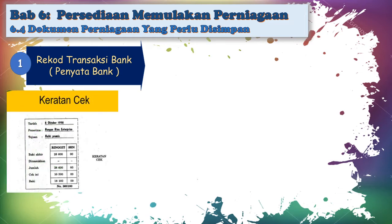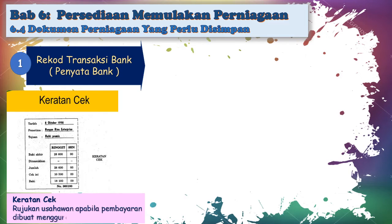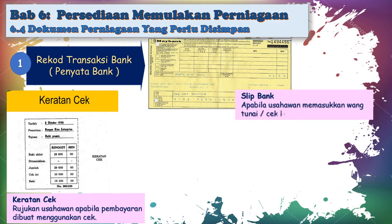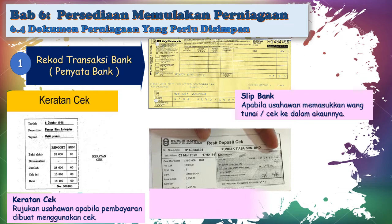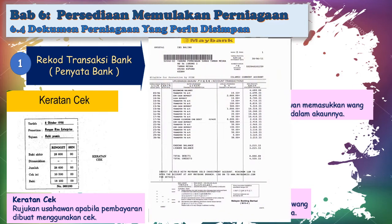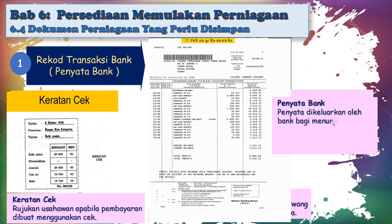Rekod transaksi bank merangkumi: keratan cek, yang perlu disimpan oleh usahawan sebagai rujukan apabila pembayaran dibuat menggunakan cek. Slip bank, apabila usahawan memasukkan wang tunai ataupun cek ke dalam akaunnya. Slip pindahan wang, apabila usahawan membuat pemindahan wang dari akaunnya ke akaun pihak ketiga. Dan penyata bank, yang dikeluarkan oleh pihak bank bagi menunjukkan transaksi yang dilakukan oleh usahawan dalam suatu tempoh.